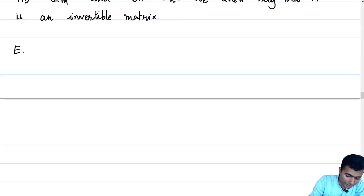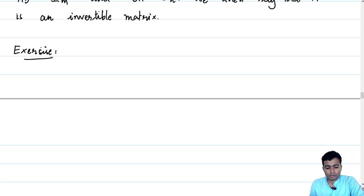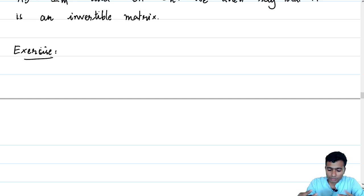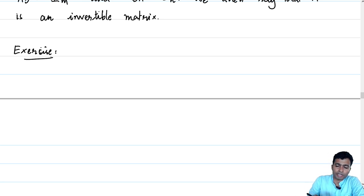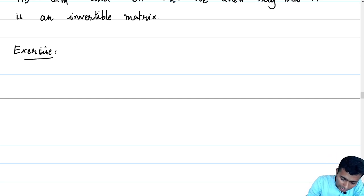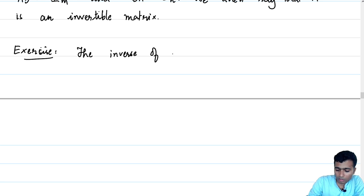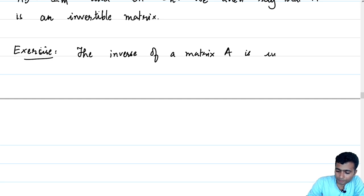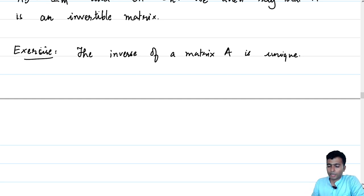An immediate exercise is to prove that matrix A has a unique inverse. The techniques to prove this have been developed and used many times. You should use the theorem proved in the last video wherein we showed that matrix multiplication is associative. The exercise is to show that the inverse of a matrix A is unique: start off with two potential inverses B and B-prime and prove that B equals B-prime.